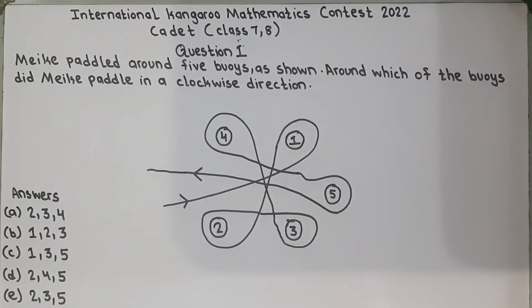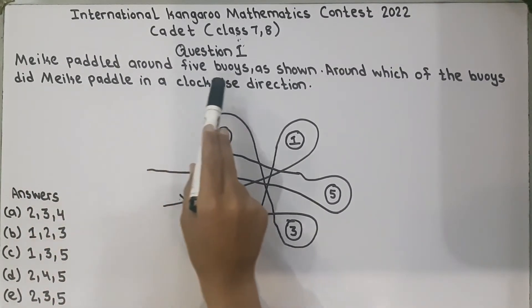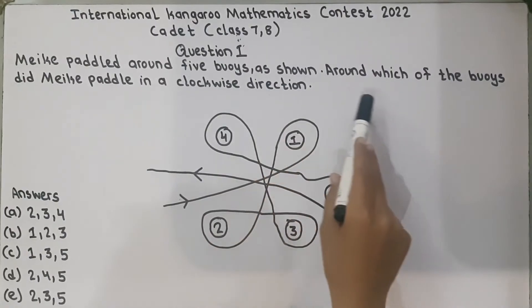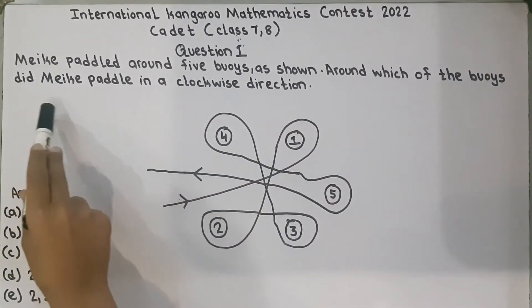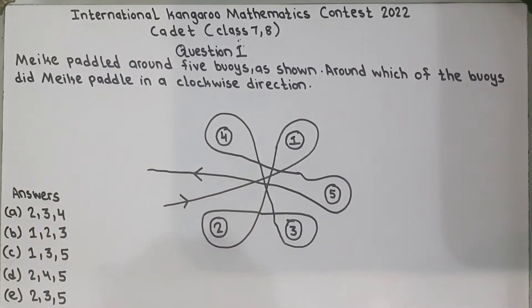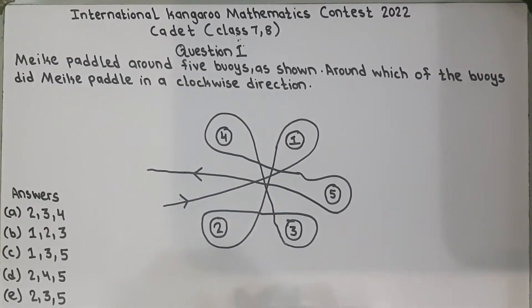Question number 1. Mikey paddled around 5 buoys as shown. Around which of the buoys did Mikey paddle in a clockwise direction? You know that a clockwise direction is like this.